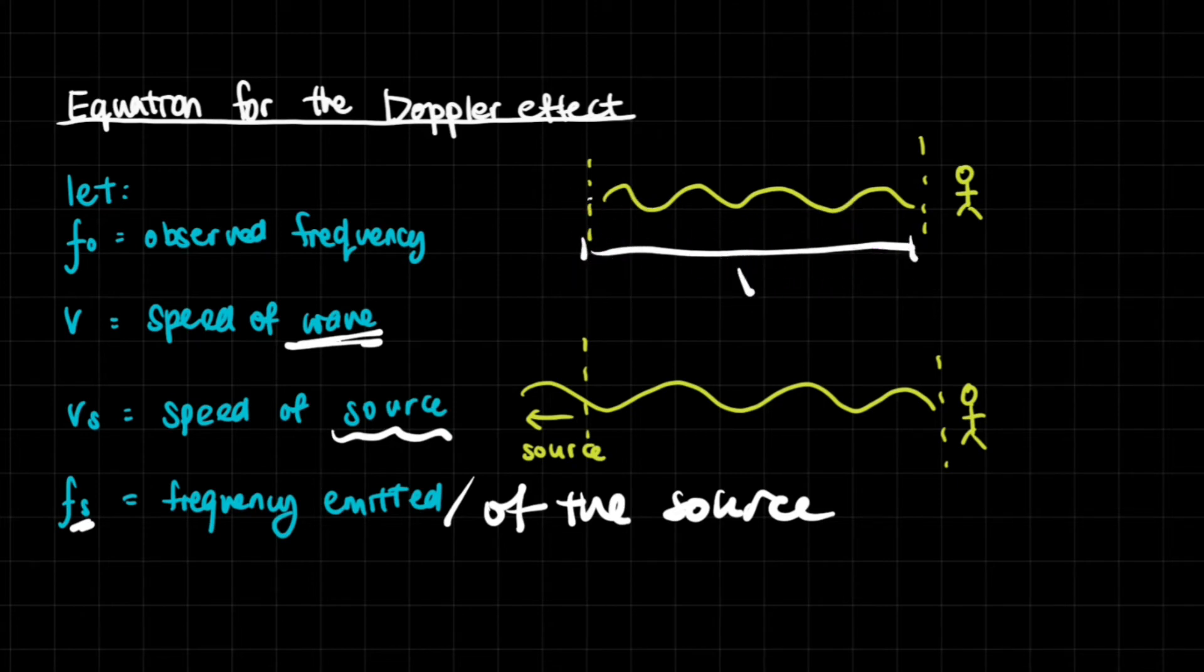Now what happens here is, let's imagine that the sound is emitted over here and it's allowed to travel for one second. It will travel this distance. We don't know how many distance this is, but we know that whatever this length is going to be V, because the speed is the amount of distance traveled per second. So the length traveled within one second equals V.